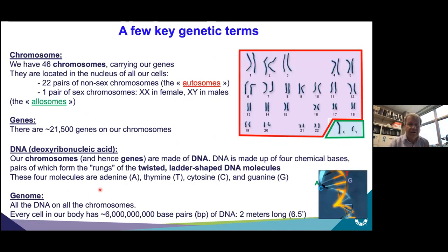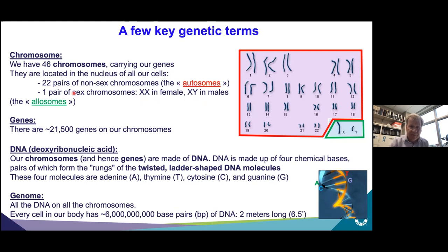To start, a few basic terms about genetics. A chromosome — we have 46 chromosomes: 22 are non-sex chromosomes, or autosomes, from which the name "autosomal dominant polycystic kidney disease" comes, and two are sex chromosomes, with males being XY and females being XX. We have two copies of each chromosome — one from the mother and one from the father. The genes dictate the proteins that make our body, and we have about 21,500 genes on our chromosomes.